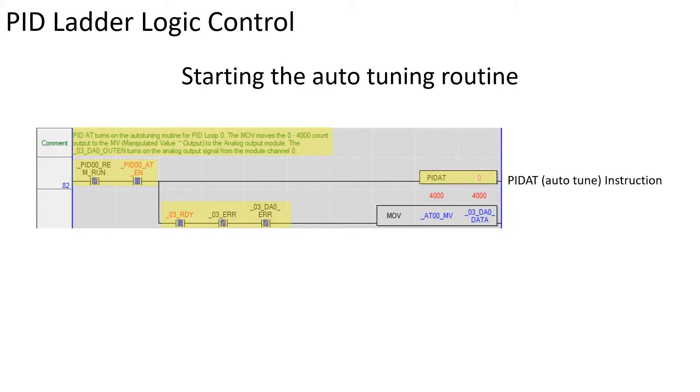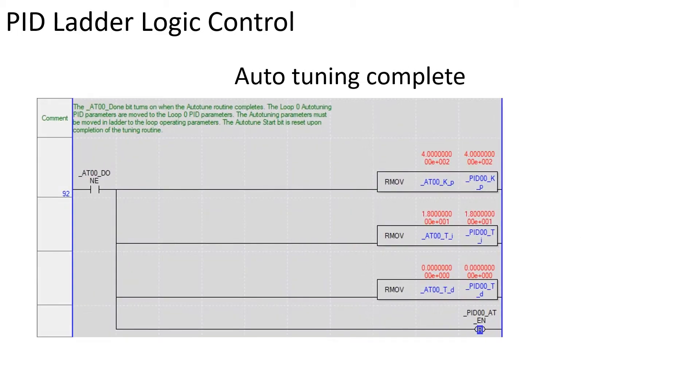If the analog module status bits are true, the auto-tune 0 MV is sent to the analog channel 0 in a range of 0 to 4000 counts. The PID loop will begin auto-tuning.